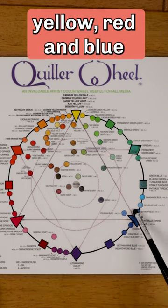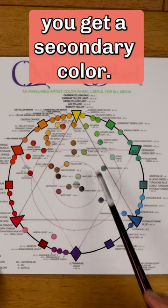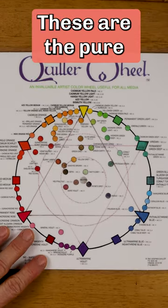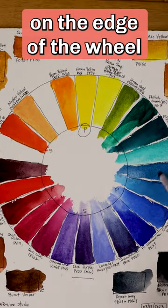We have the primaries: yellow, red, and blue. When you mix two primaries, you get a secondary color. These are the pure, saturated colors that are located on the edge of the wheel.